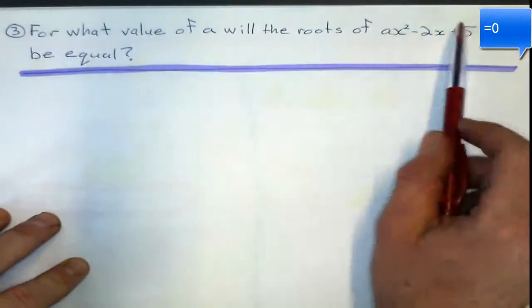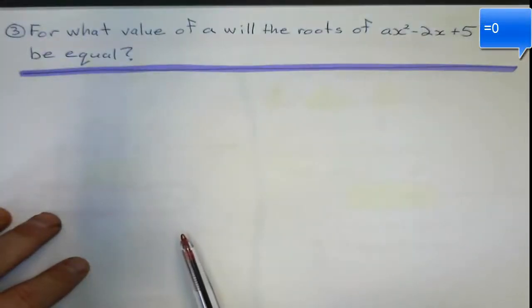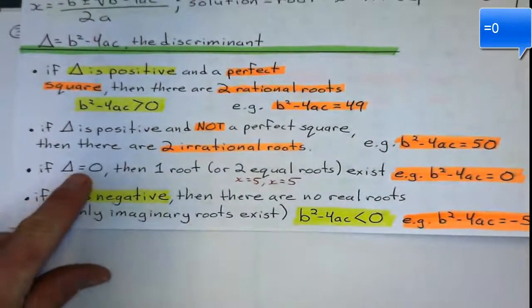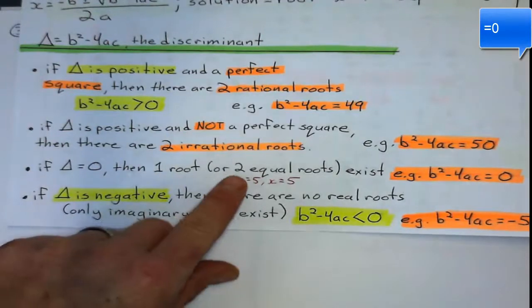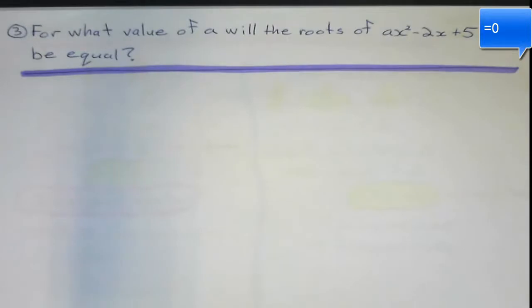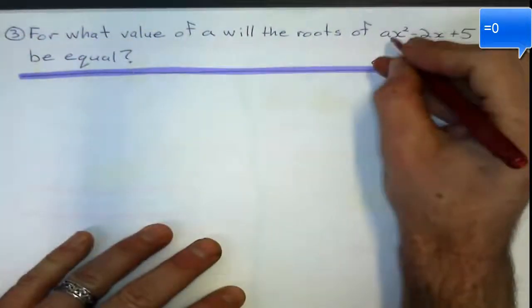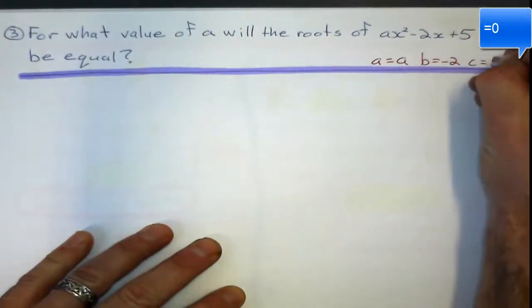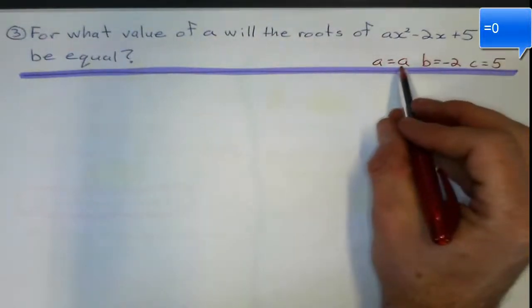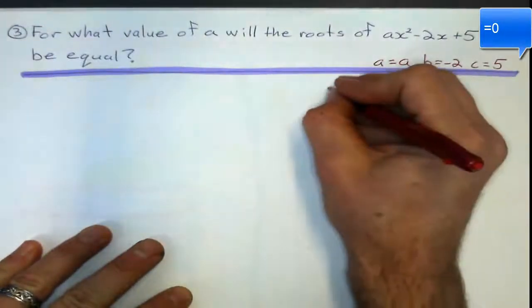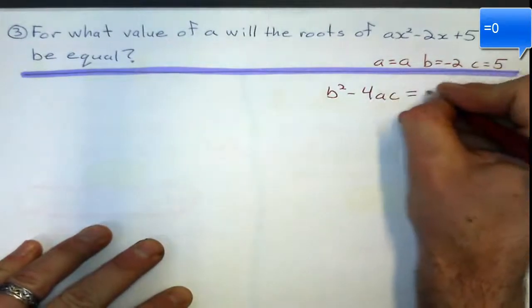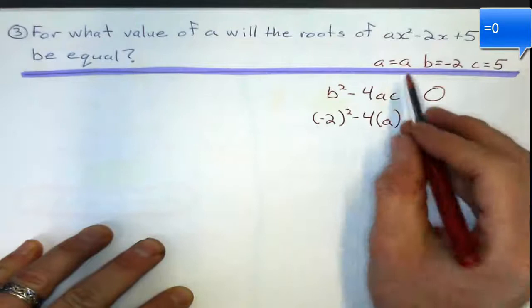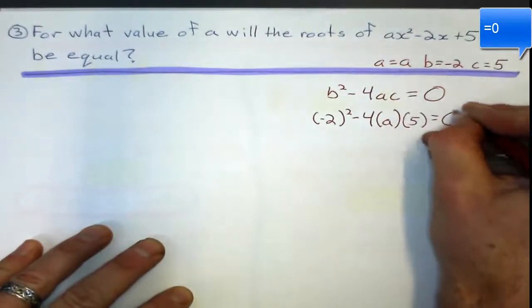For what value of A, that coefficient right there, the x squared term, will the roots of this guy be equal? What does the roots equal mean? That means two equal roots are going to mean that the discriminant is going to be equal to 0. Let's get A, B, and C here. A is going to equal A, because that's the coefficient there. B is going to be negative 2, and C is going to be equal to 5. So what will the value of A be to make that equal 0? When will B squared minus 4AC equal 0? Well, B is negative 2 squared minus 4 times A times C equals 0.